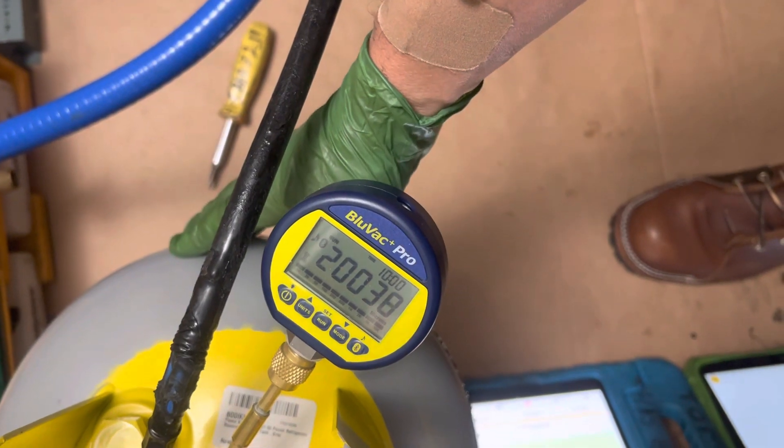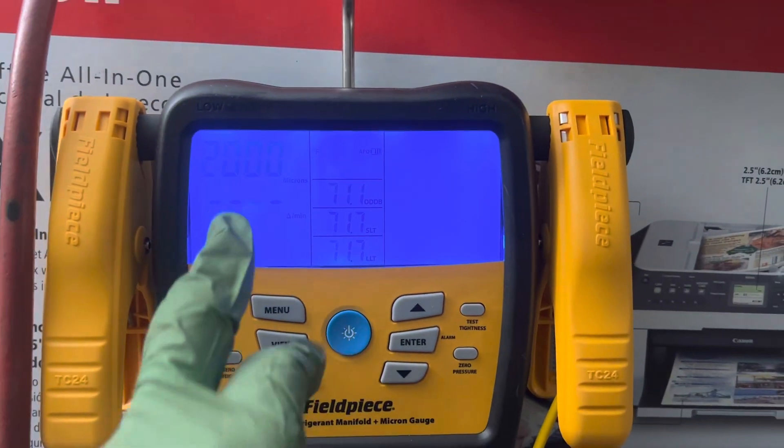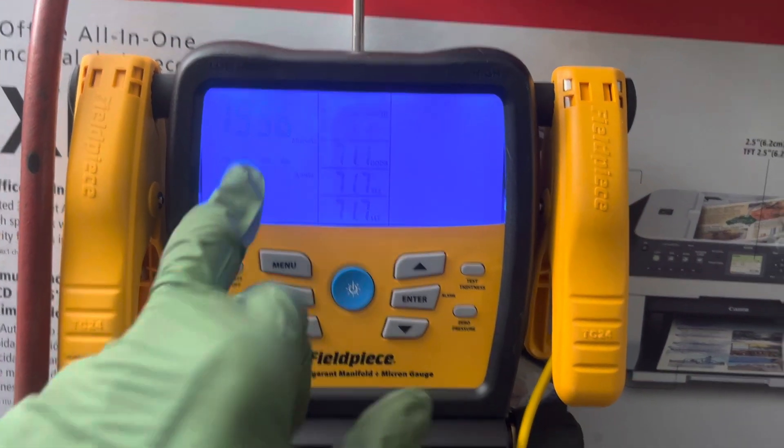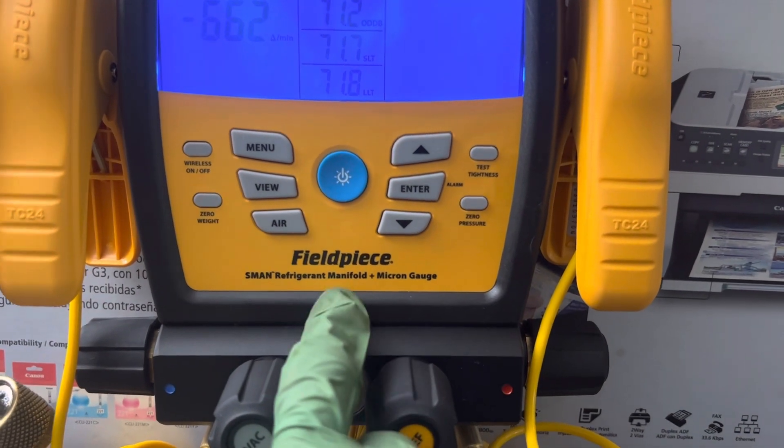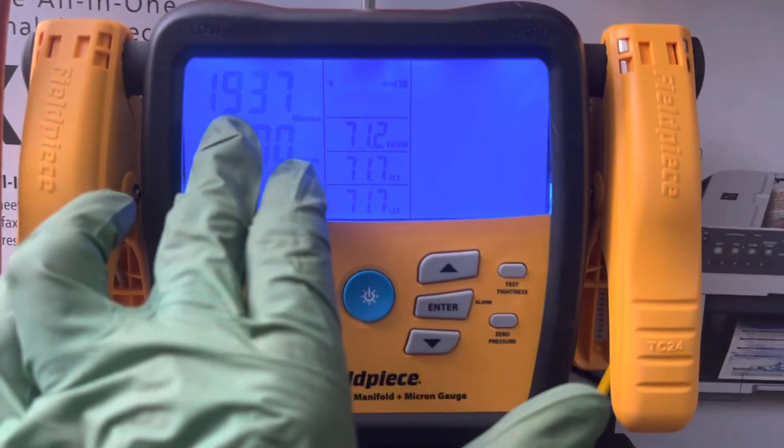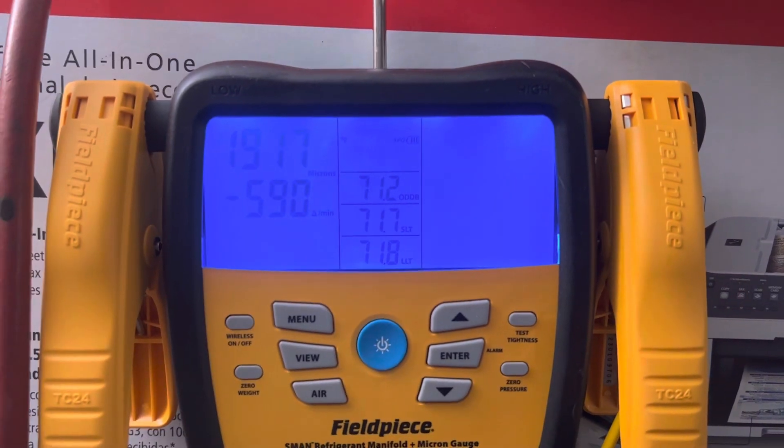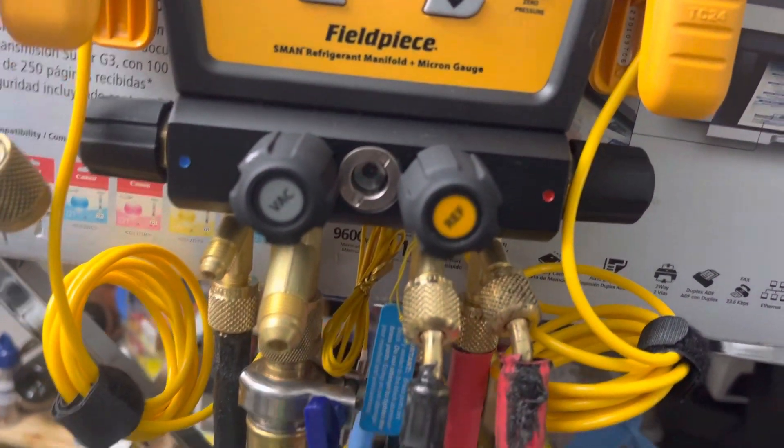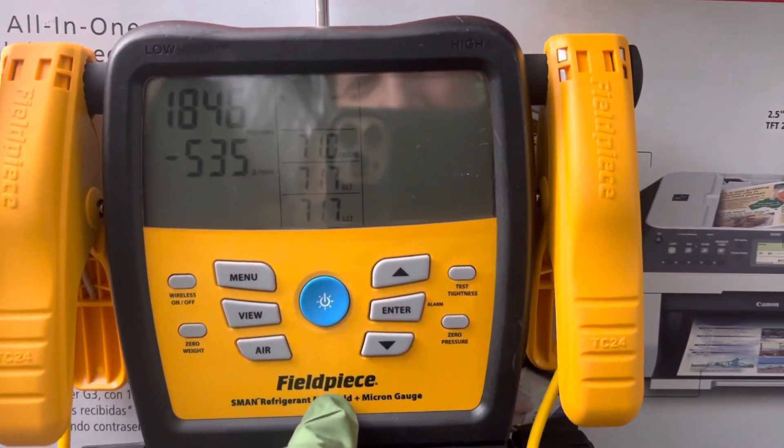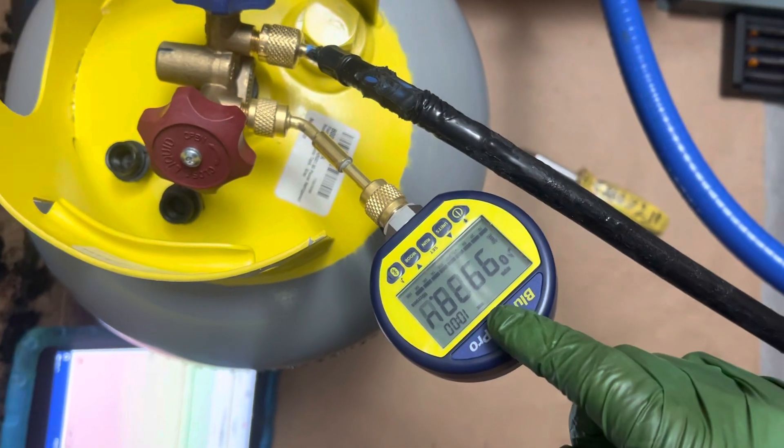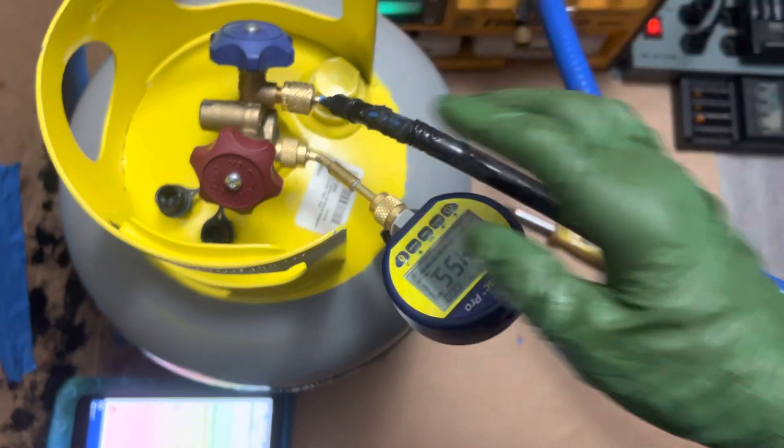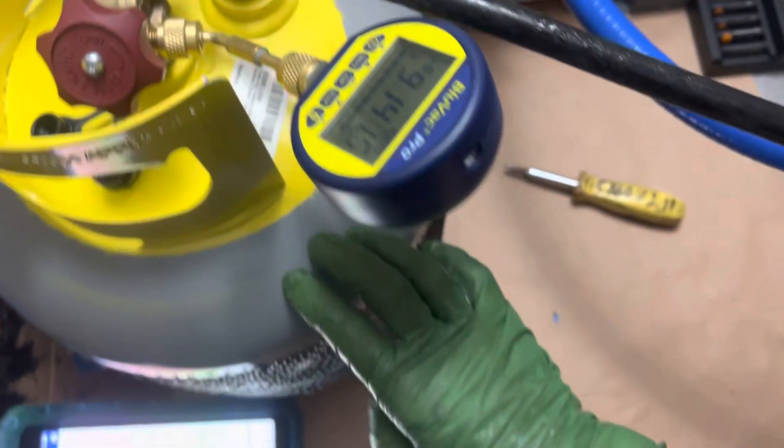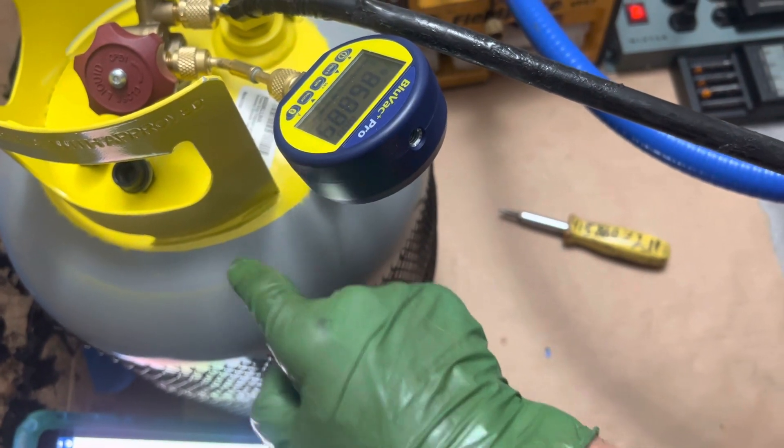Our container is now in the 20,000 micron region, and our micron sensor located inside the FieldPiece just got below the 2,000 micron region. You see the big difference? The micron reading right here is right next to where the vacuum is being pulled, so it's a completely different reading here than it is here. We're in the 10,000 region right now—that is the vacuum of the tank. So there's a big difference between the vacuum in the system compared to the vacuum in the hose.